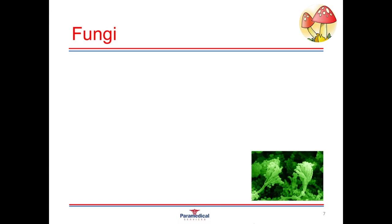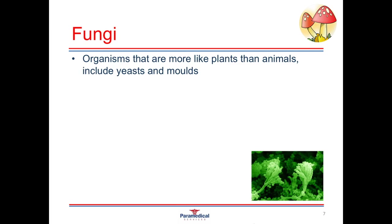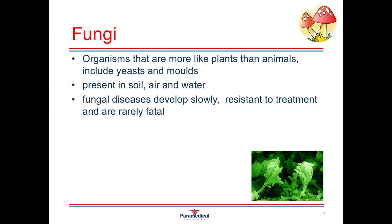Fungi are a different type of infectious agent, again different to viruses and bacteria in their shape, structure, and nature. Fungi are organisms that are more like plants than animals, and these include yeasts and moulds. Fungi can be present in soil, air, and water. They are very happy living independently of any kind of human or animal host, but when they do come into contact with a host, they are a pathogen that causes a very slow development of disease. They're usually more mildly irritating compared to being fatal.